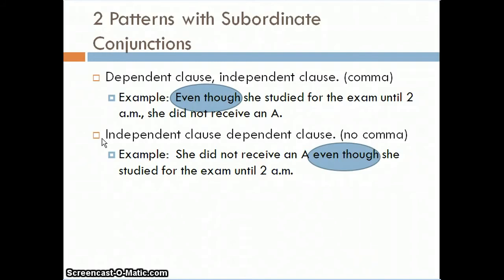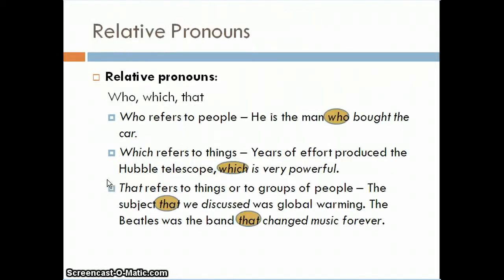The other option is to start with the independent clause. If the dependent clause follows the independent clause, we do not need a comma. For example: 'She did not receive an A even though she studied for the exam until 2 a.m.' The dependent clause still begins with 'even though,' but because it follows the independent clause, no comma is needed. Essentially, the order of the clauses determines whether a comma is required.